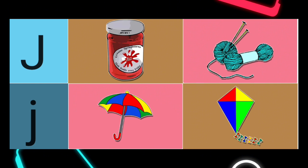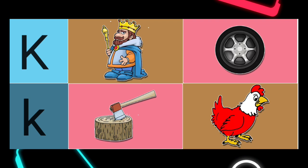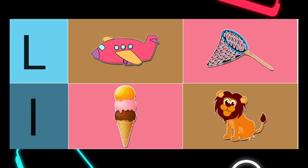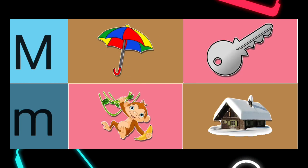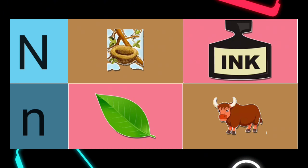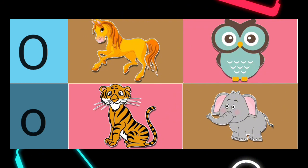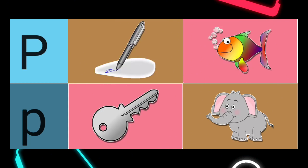J is for. Right answer: J is for Jam. K is for. Right answer: K is for King. L is for. Right answer: L is for Lion. M is for. Right answer: M is for Monkey. N is for. Right answer: N is for Nest.